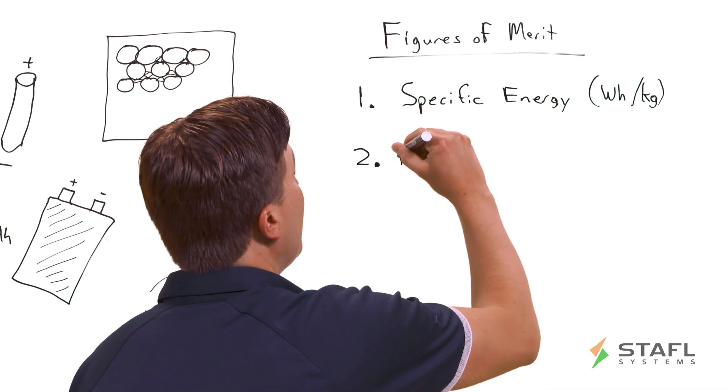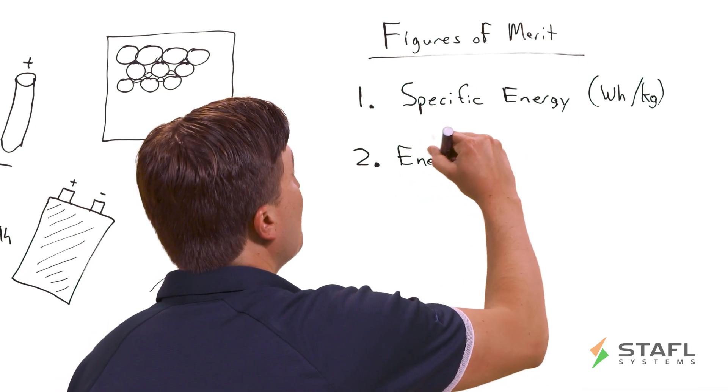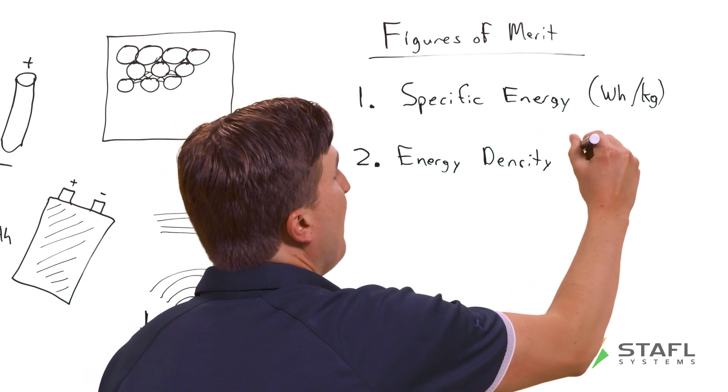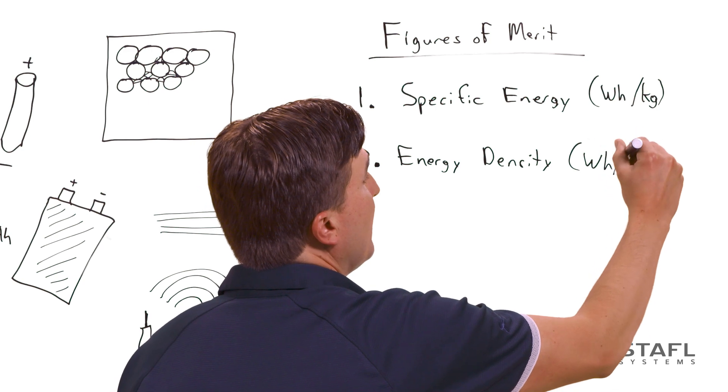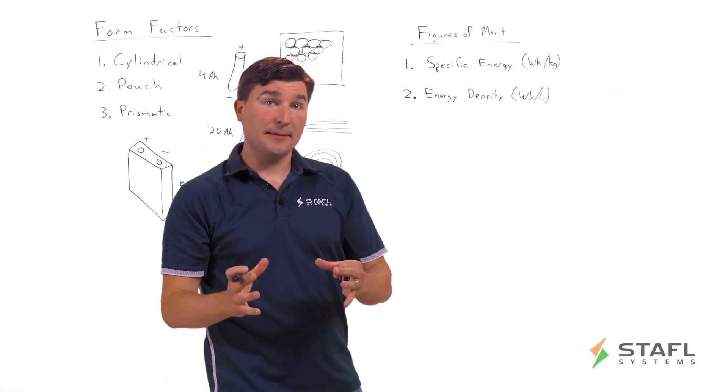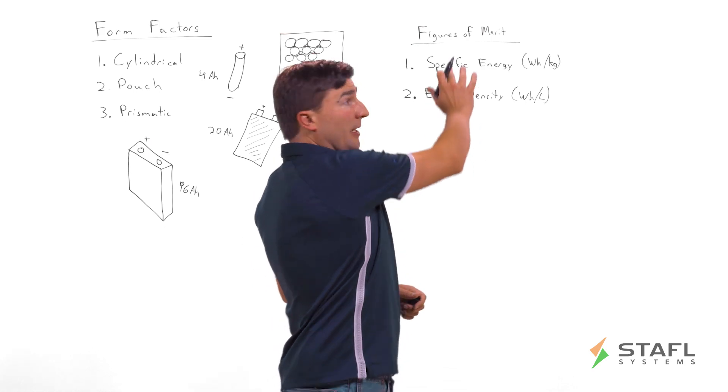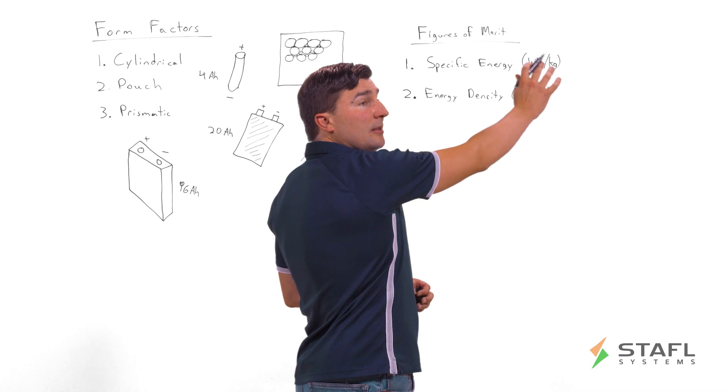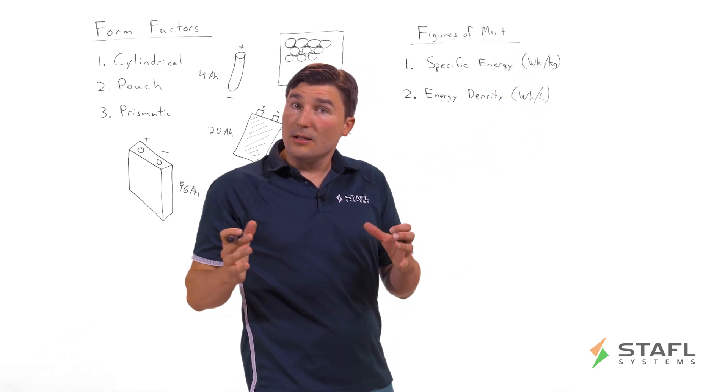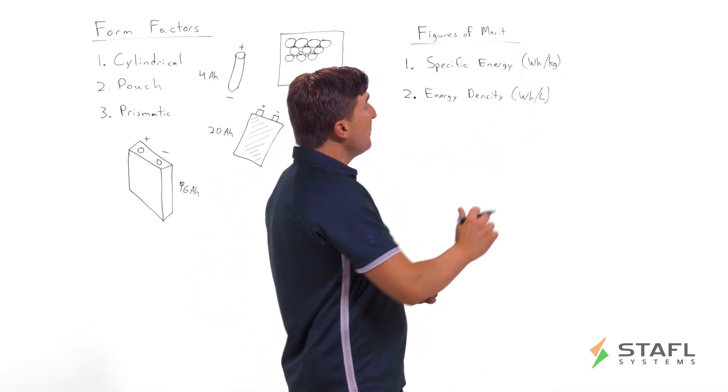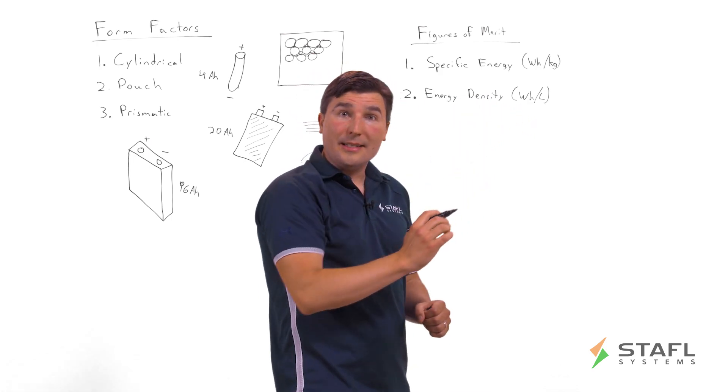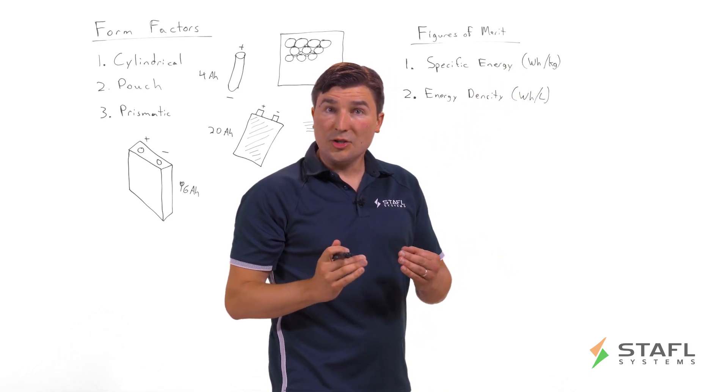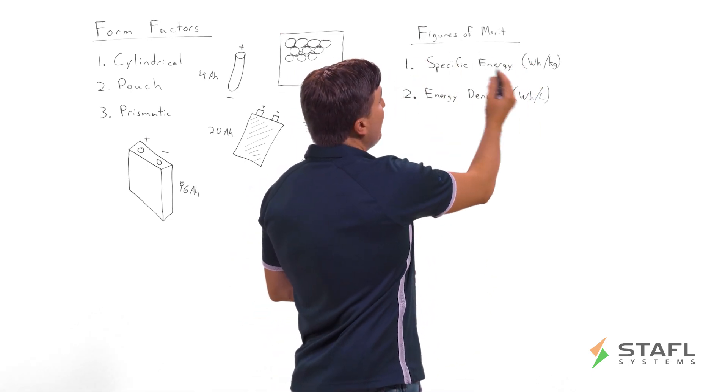The next one would be energy density. So energy density is given in watt hours per liter. So this is how much energy you can actually fit in a given space. And as you can imagine, some applications like aeronautical applications, drones, aircraft, are very weight sensitive, whereas they could accommodate a slightly larger size. As opposed to other applications where energy density is critical and it can accommodate a little bit of extra weight. So understanding the trade-offs of each application can help figure out which type of cell you need.